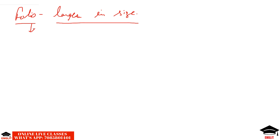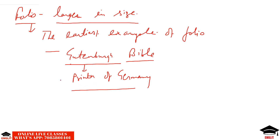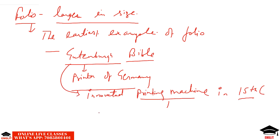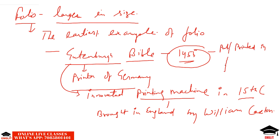Talking about the history of books published in folio form, we have the earliest example: the Gutenberg Bible — the Bible printed by Gutenberg. Gutenberg was a printer from Germany who developed the printing machine, which was brought to England by William Caxton. Gutenberg's Bible was published in 1455, making it the earliest example of any book printed in folio form.